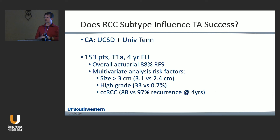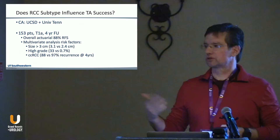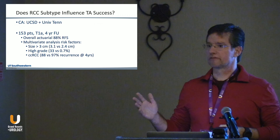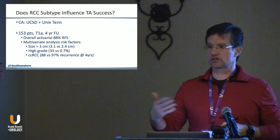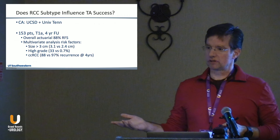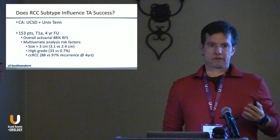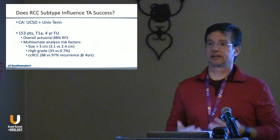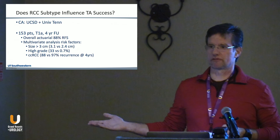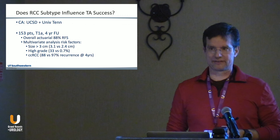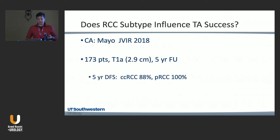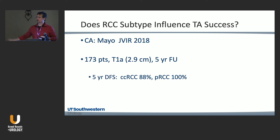This brings up the concept of biopsy before ablation. If a patient has a high-grade clear cell carcinoma on biopsy, I might show them this data and recommend partial nephrectomy instead. But if I know it's a papillary tumor — for example, a hypo-enhancing tumor in an African American patient — I would biopsy to confirm and then offer ablation with confidence, knowing I cannot do better than 97-98% success. Mayo Clinic published data on 170 patients: five-year disease-free survival was 90% for clear cell and 100% for papillary.